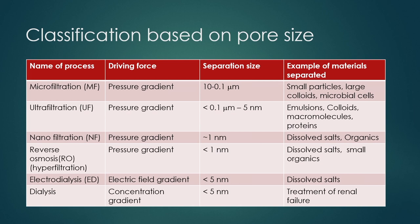Microfiltration is generally used for particles in the range of 10 to 0.1 micrometers — large colloids, particles, and microbial cells. Ultrafiltration separates emulsions, colloids, and macromolecules like proteins. Nanofiltration separates dissolved salts and organics. Reverse osmosis separates dissolved salts and small organics — in domestic use, we use reverse osmosis to separate dissolved salts from drinking water. Electrodialysis and dialysis generally separate dissolved salts; dialysis is used in treatment of renal failure.